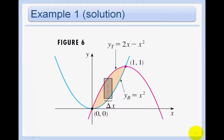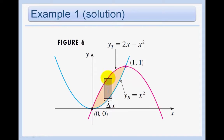Looking at the illustration, y equals 2x minus x squared is above the curve y equals x squared on the interval from 0 to 1. That's how you find the area under 2x minus x squared and above y equals x squared. Remember, you always have to do the top curve minus the bottom curve.